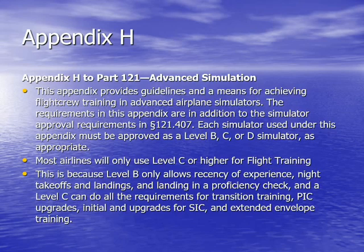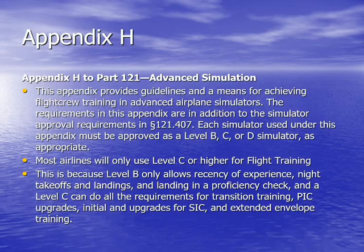A quick example of an accident that happened with a wake turbulence encounter was Delta Airlines flight 9570 in Fort Worth, where a DC-9 was following a DC-10 doing flight training and it actually crashed. The DC-9 was following the DC-10 too closely, encountered wake turbulence, and four crew members doing flight training were killed. So obviously airlines have moved away from this and are now using advanced simulators instead of airplanes for this type of flight training.